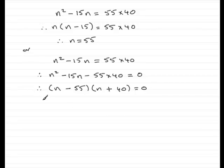So in the usual way, we'd put each factor equal to 0. So we'd have n minus 55 equals 0 or n plus 40 equals 0. And from this equation, if we add 55 to both sides, we've got n equals 55. And in this one, if we subtract 40, we've got n equals minus 40.